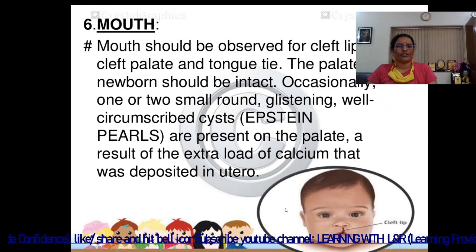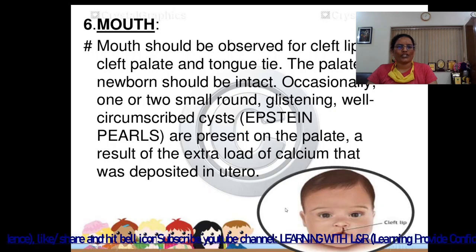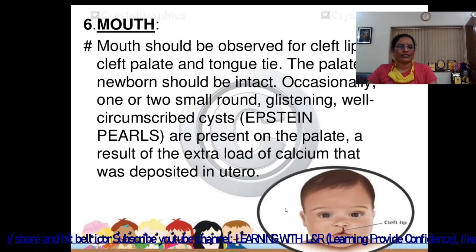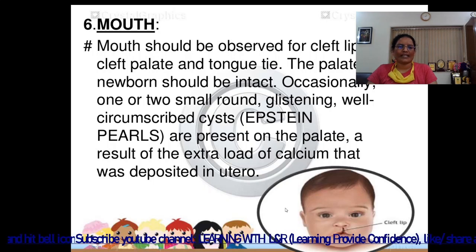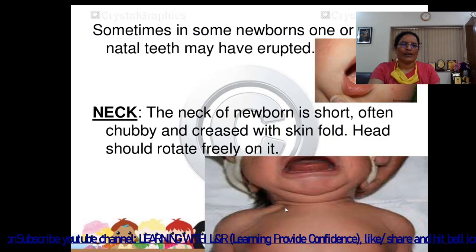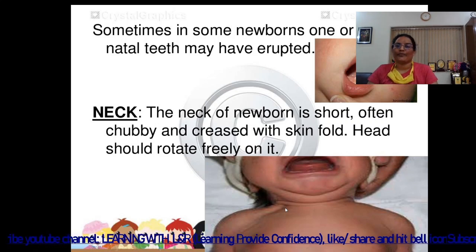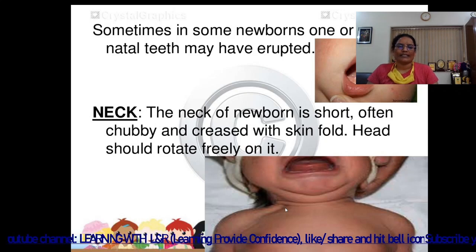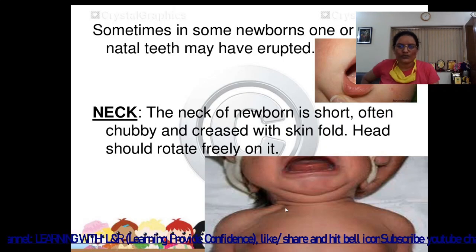Mouth should be observed for cleft palate and tongue tie. The palate of the newborn should be intact. Occasionally, one or two small round glistening well-circumscribed cysts are present on the palate as a result of extra calcium deposited in utero. In some newborns, one or two natal teeth may be erupted. The neck of the newborn is short, often chubby, and covered with skin folds; the head should rotate freely on it.